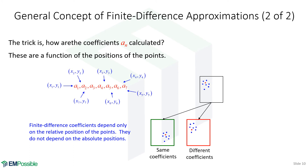If, however, we keep the blue points the same but move the red point even slightly, we have entirely new finite difference coefficients — we have to start over, because the relative positions of the blue points with respect to the red point have changed. Similarly, if we keep the red point the same but redistribute the blue points, that's again an entirely new problem requiring completely new finite differences. The only thing we're free to do is translate the entire group of points together. If all we're doing is translating, the finite difference coefficients remain the same. This is hugely useful and you'll see how we use this in later lectures.